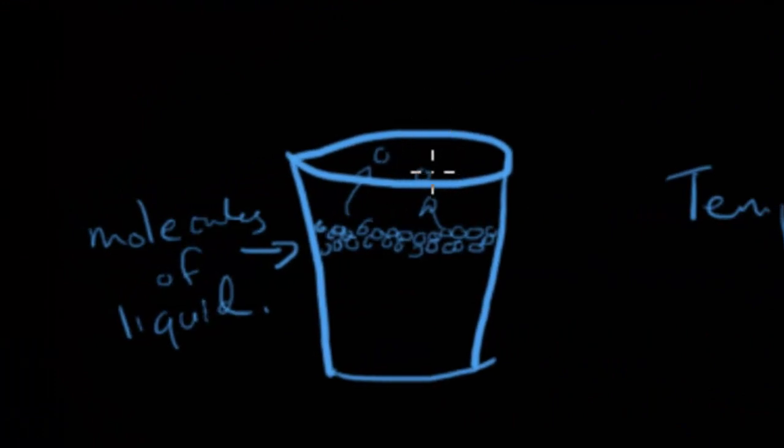Now let's say these gas molecules are escaping the liquid, so I've got a couple of gas molecules right here above the liquid, they've escaped the surface of the liquid, and they're all moving in random directions, just like gases normally do. They're going all over the place.